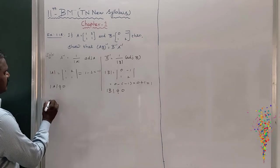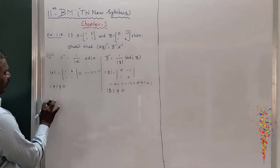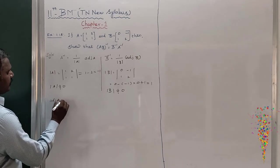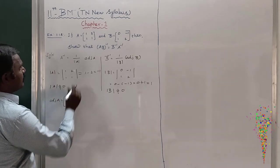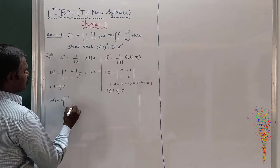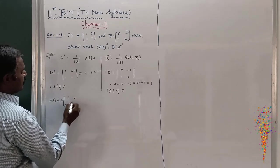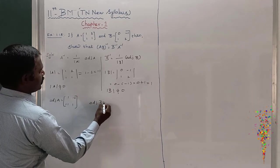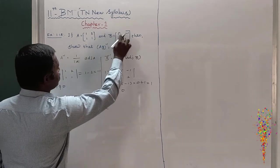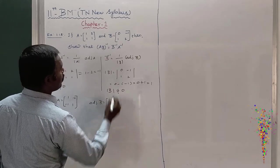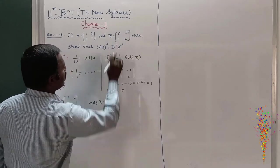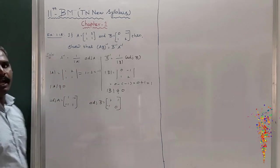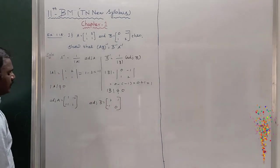So adjoint of A — as I already told you, you interchange the diagonal elements 1 and 1 and change the sign of the off-diagonal elements, giving adjoint A equals [-1, 2; 1, -1]. Wait — adjoint of B: interchange the two diagonal terms 0 and 2, and change the sign of minus 1 to plus 1, giving adjoint B equals [2, 1; -1, 0].